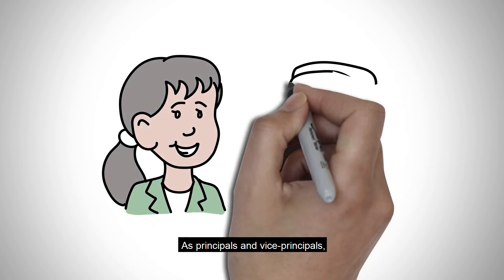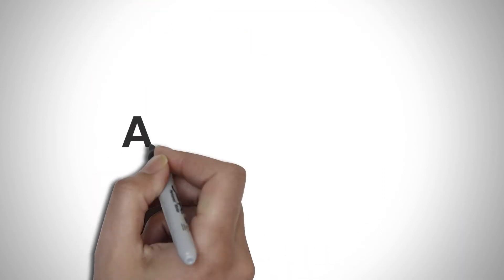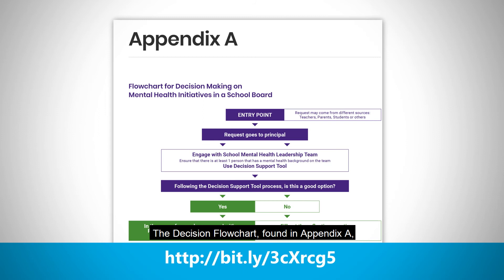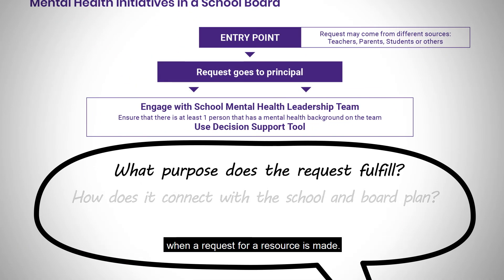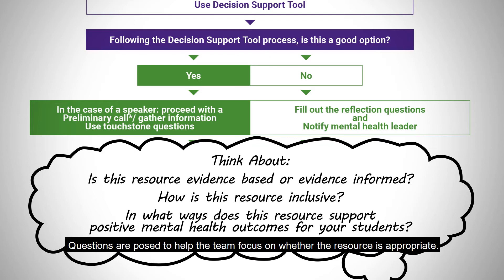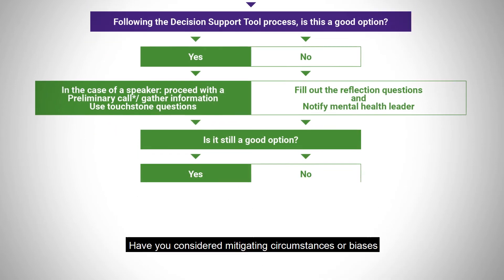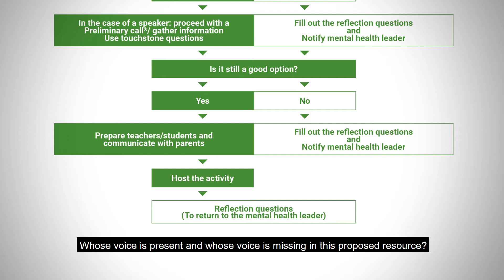As principals and vice principals, you're tasked with collaboratively planning robust activities that create mental health awareness in your school. The decision flowchart found in Appendix A is a starting point for exploring and choosing suitable resources. The first part of the flowchart speaks to the process within your school when a request for a resource is made. Questions are posed to help the team focus on whether the resource is appropriate: Have you considered mitigating circumstances or biases that may be hindering equitable supports or outcomes? Whose voice is present and whose voice is missing in this proposed resource? Has staff received training or been informed of their role and what is expected of them?